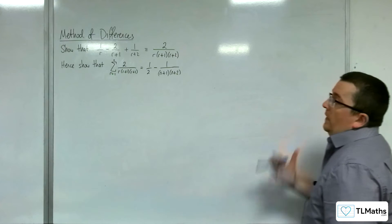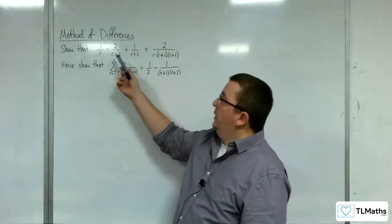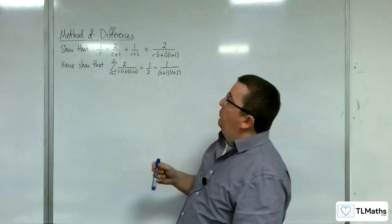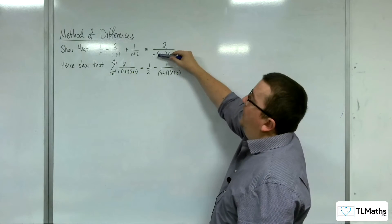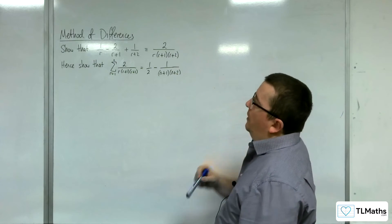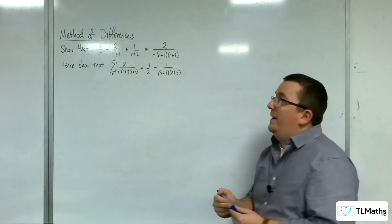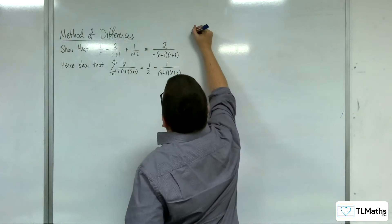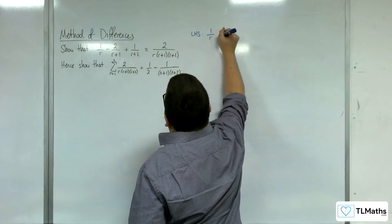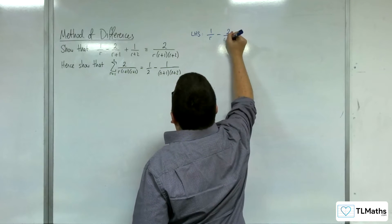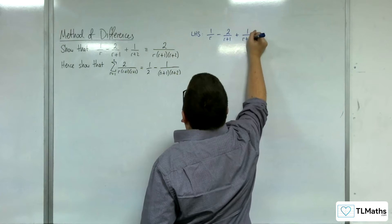In this video, the first thing that we need to do is show that 1 over r, take away 2 over r plus 1, plus 1 over r plus 2 is equivalent to 2 over r(r+1)(r+2). So, what we're going to do is start with that left-hand side. On the left-hand side, we've got 1 over r, take away 2 over r plus 1, plus 1 over r plus 2.